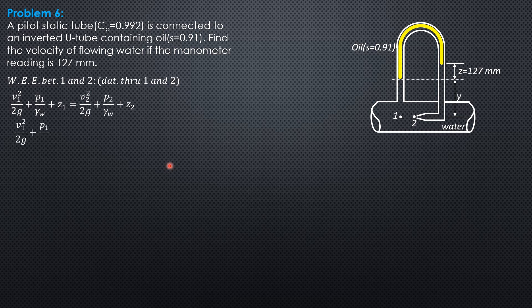v₁² over 2g plus pressure head at 1 plus zero equals zero plus pressure head at 2 plus zero. Therefore, v₁ is square root of 2g quantity (p₂ over γ of water minus p₁ over γ of water).